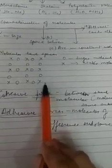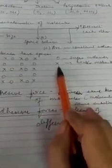Take water and put some sugar in it and stir it well. Let us represent water molecules as cross and sugar molecules as circles.